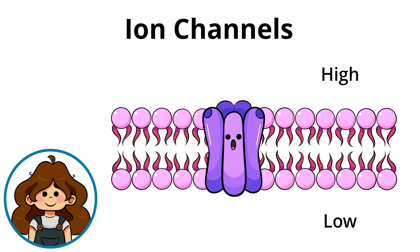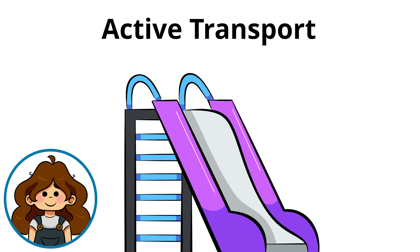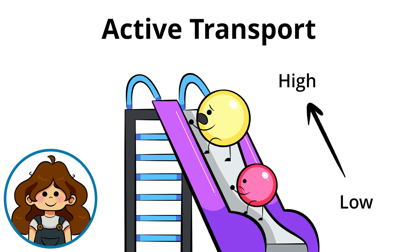So ion channels act as passageways that open or close in response to signals, such as electrical impulses or chemical messengers. Unlike passive transport, active transport requires energy because molecules are moving against the concentration gradient, flowing from low to high concentration.